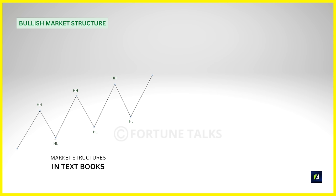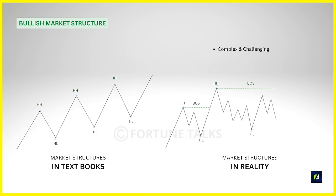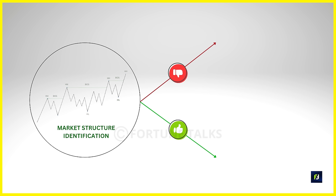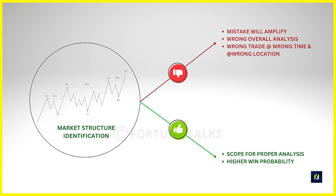Think of a bullish structure as an uptrend with many more constraints, and a bearish structure as a downtrend with more factors to consider. Market structure is not always easy to identify — it is more complicated and challenging than we think. I personally believe that if you get this particular step right, you'll be able to get most of your trade analysis correct. This is where most people make mistakes, and a mistake here amplifies through the rest of your analysis, resulting in wrong trades at the wrong time and location.